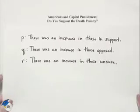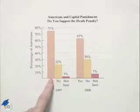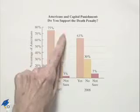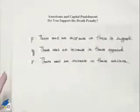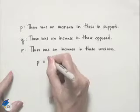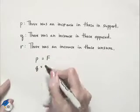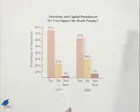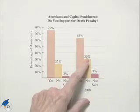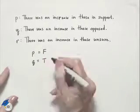P, remember, is that there was an increase in those in support. Notice that the bar corresponding to those in support has decreased. So our P statement is actually false — there was not an increase. Our Q statement asks: was there an increase in those opposed? That's the middle bar. We had 22% in 1997 and 30% in 2008, so there was an increase. Our Q statement is true.